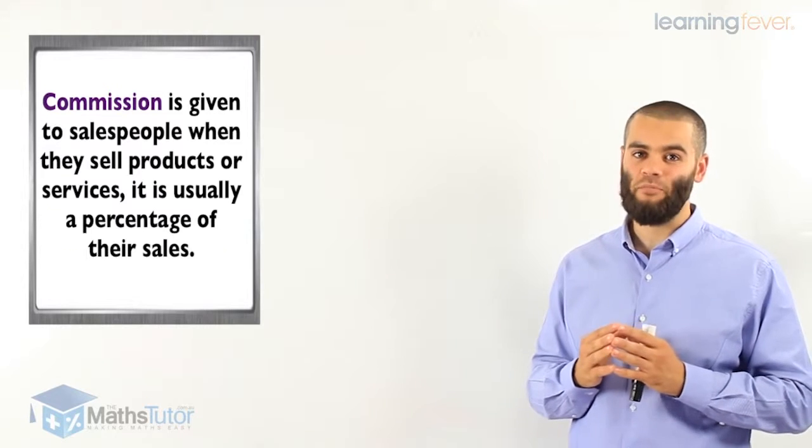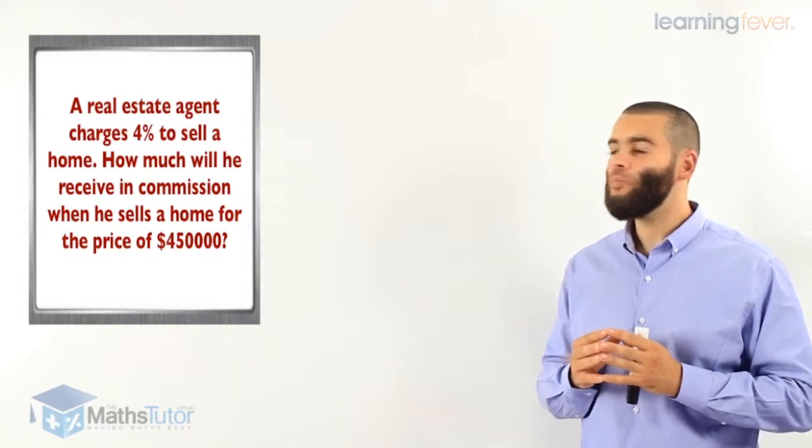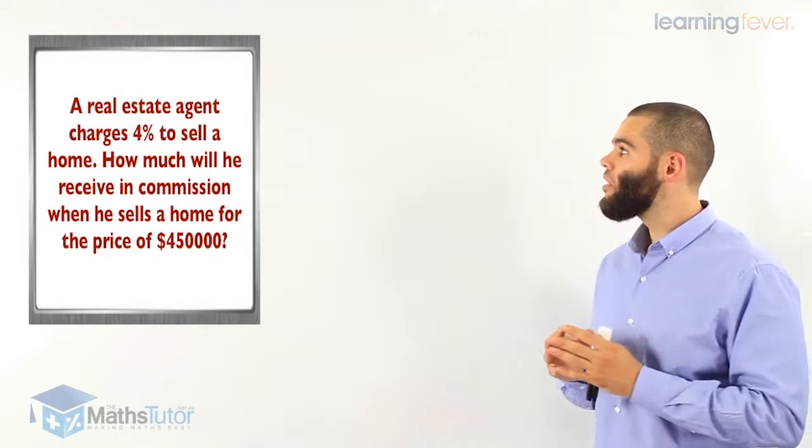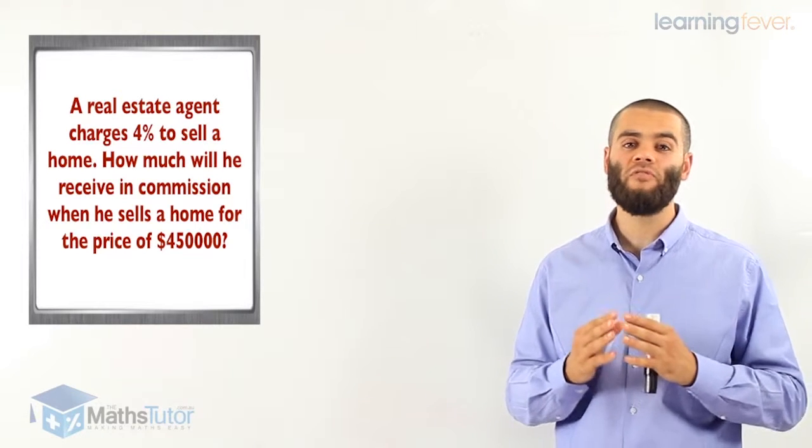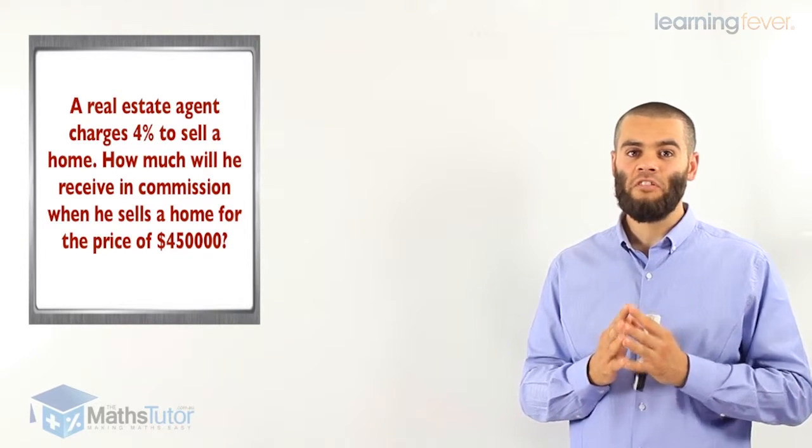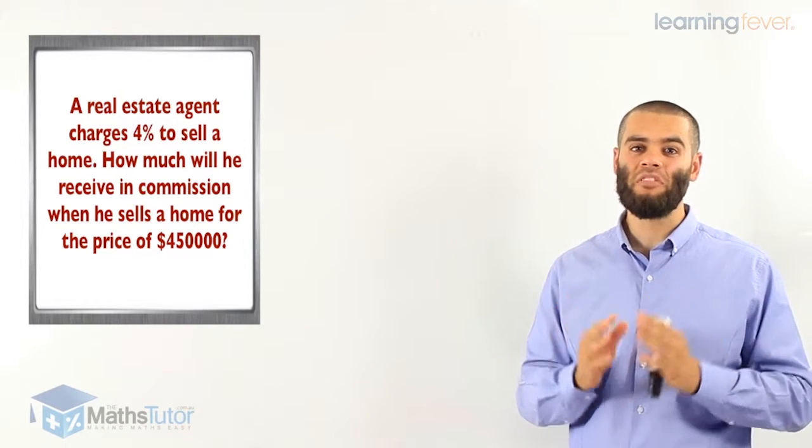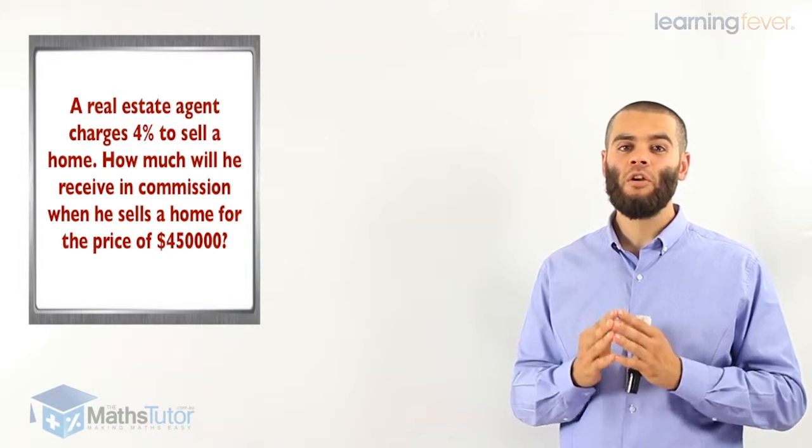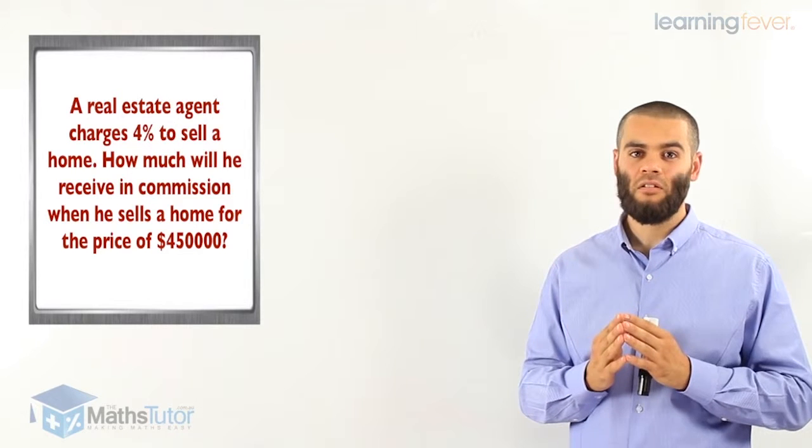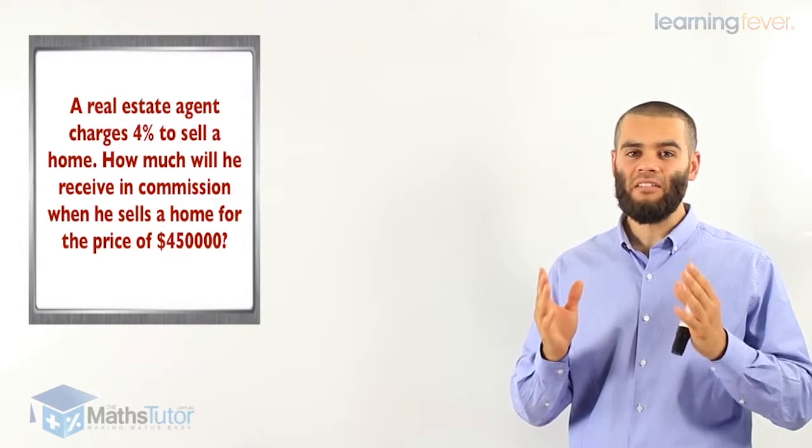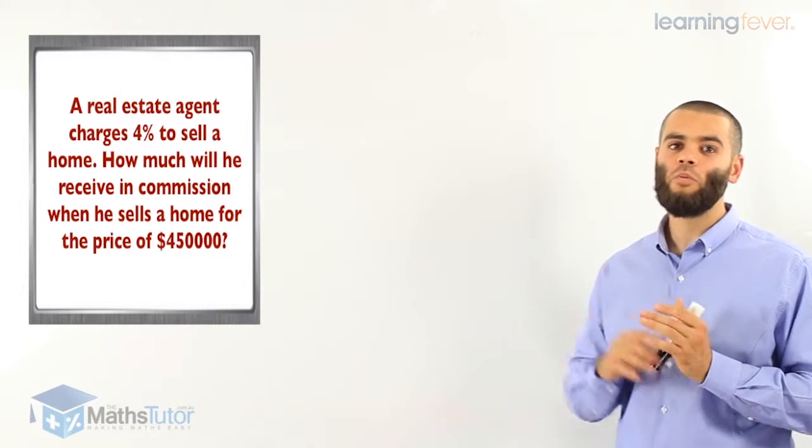Here we have an example which says a real estate agent charges 4% to sell a home. How much will he receive in commission when he sells a home for the price of $450,000? So this home, he sold it for $450,000 and he charges 4%. That means he's going to take $4 out of every $100 from this sale. So 4%, 4 out of every 100 times $450,000. Let's work it out.